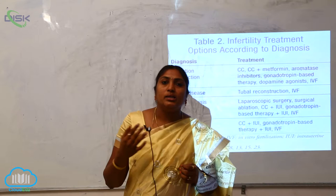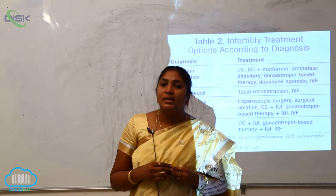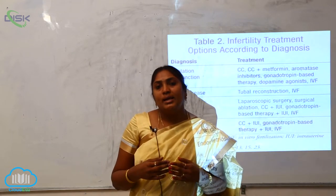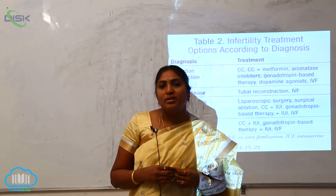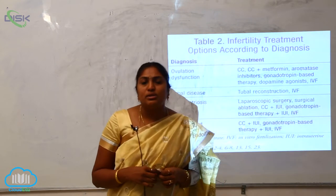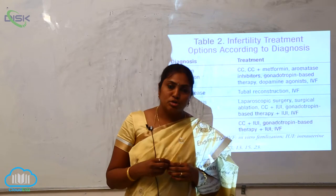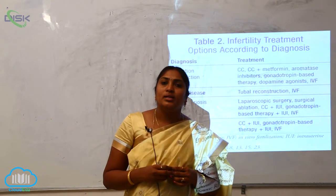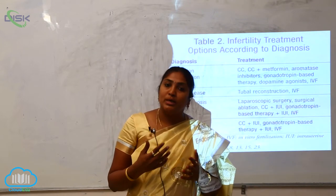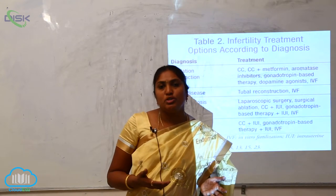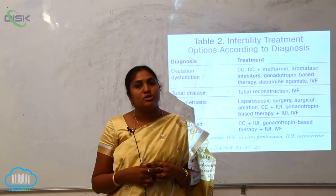The pituitary gland releases very important hormones in both male and female reproductive systems. In males, the anterior part of the pituitary secretes hormones that stimulate testosterone production. The luteinizing hormone initiates male systems to secrete testosterone, and the Leydig and Sertoli cells synthesize and form sperm. The formation of sperm, called spermatogenesis, is influenced by pituitary gland secretions.